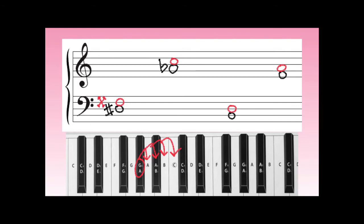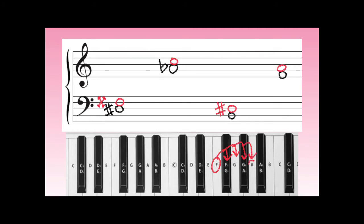Now let's count up four half-steps from B in the bass clef: one, two, three, four. Is this a D-sharp or an E-flat? In this case, it's a D-sharp. And finally, starting on F, going up one, two, three, four half-steps, we arrive on an A — A natural is the correct answer.